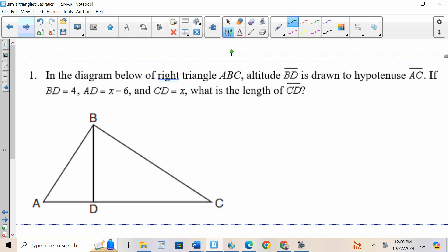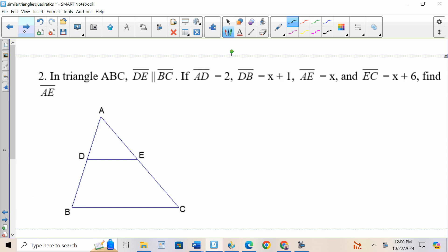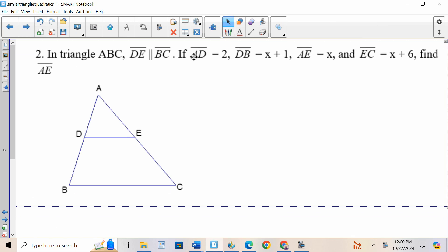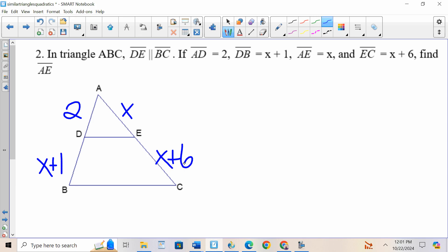Let's go through three examples, let's start with number two. I see a candy corn problem, let's put the information into the problem. AD is 2, DB is X plus 1, AE is X, EC is X plus 6.